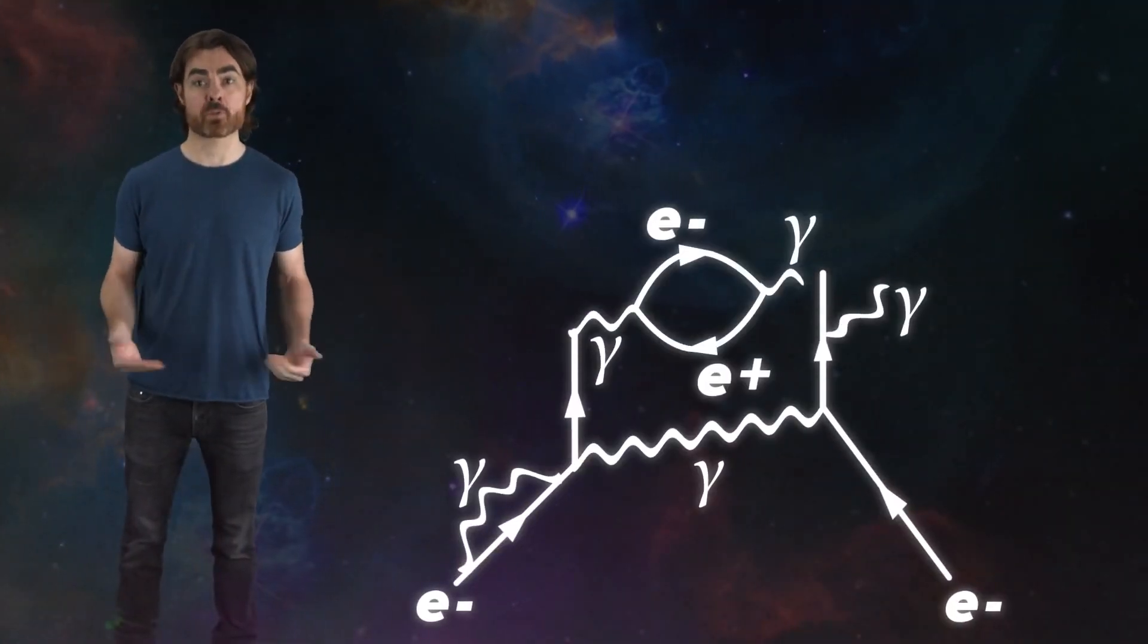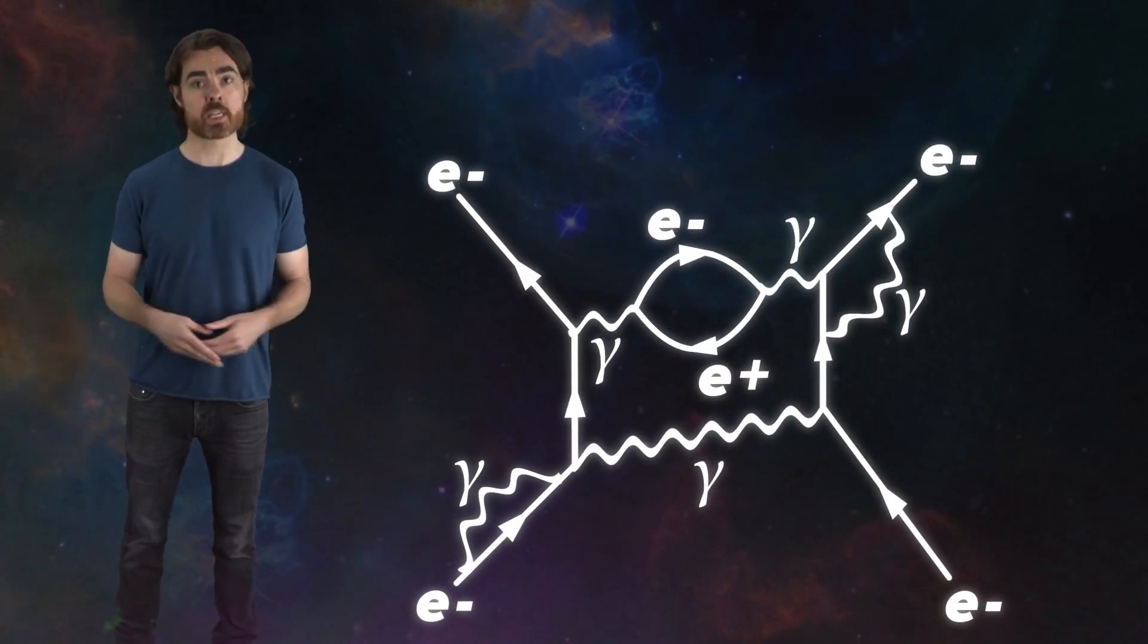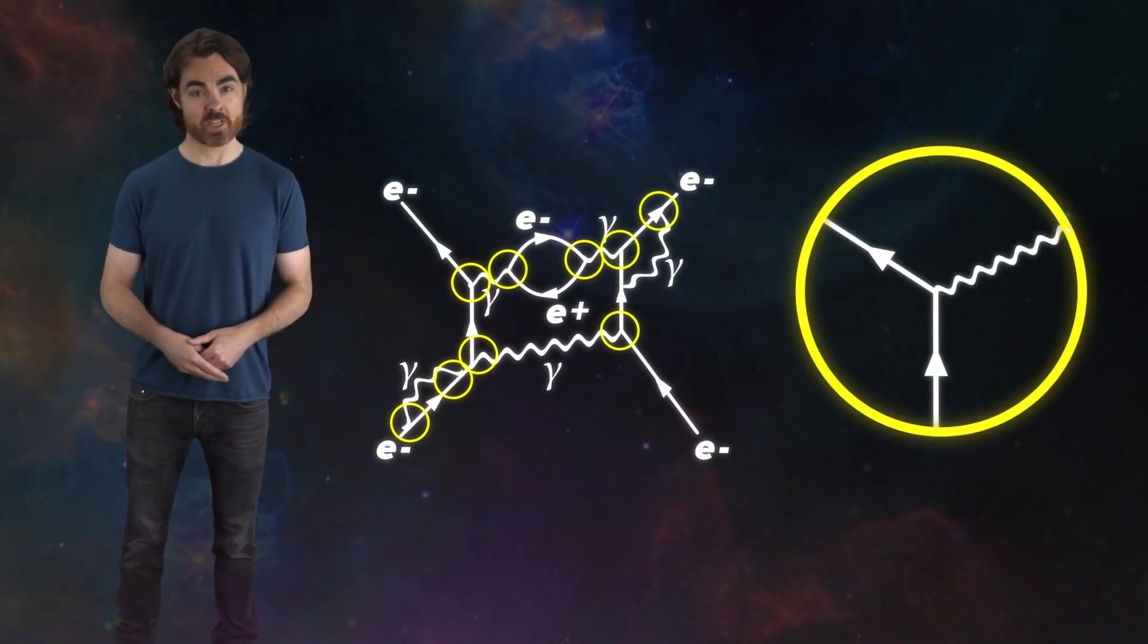Similarly, if a photon creates a negatively charged electron, it must also create a positively charged positron. There are other more complex ways in which ingoing and outgoing particles can balance charge. But as we'll see, all of these can be built up from this one vertex.